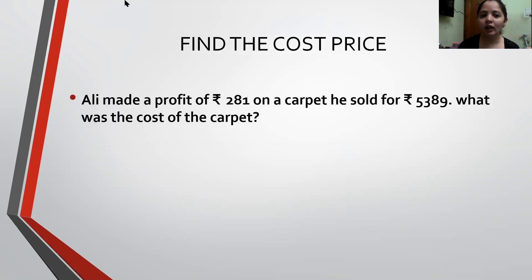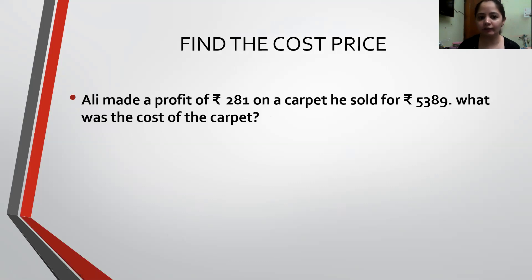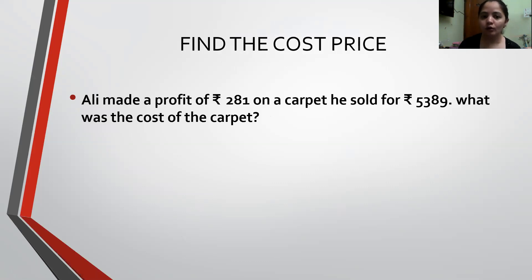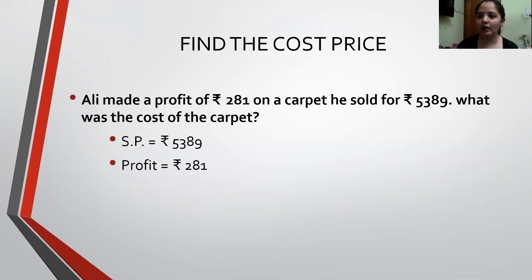The next example says: Ali made a profit of Rs. 281 on a carpet. He sold it for Rs. 5,389. This time, Ali is making a profit on selling the goods. So the Selling Price of the carpet is Rs. 5,389 and the Profit earned on selling the carpet is Rs. 281.